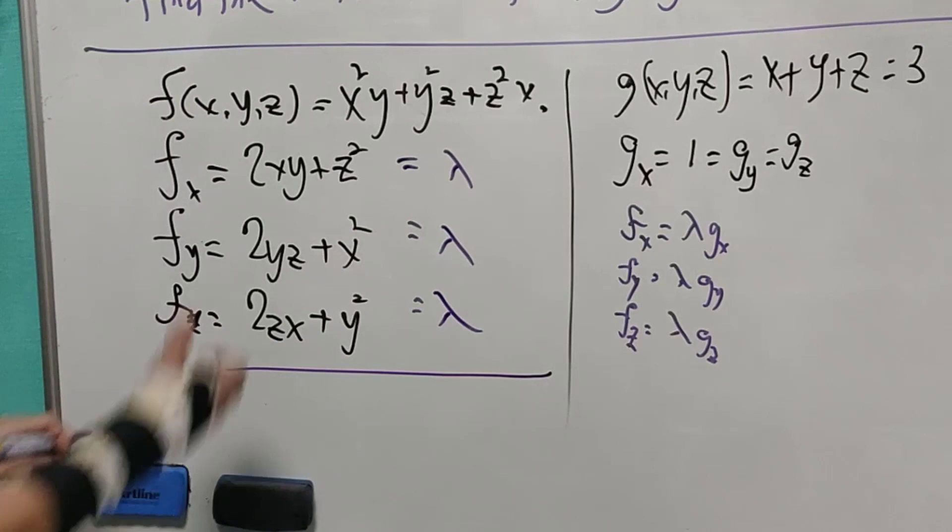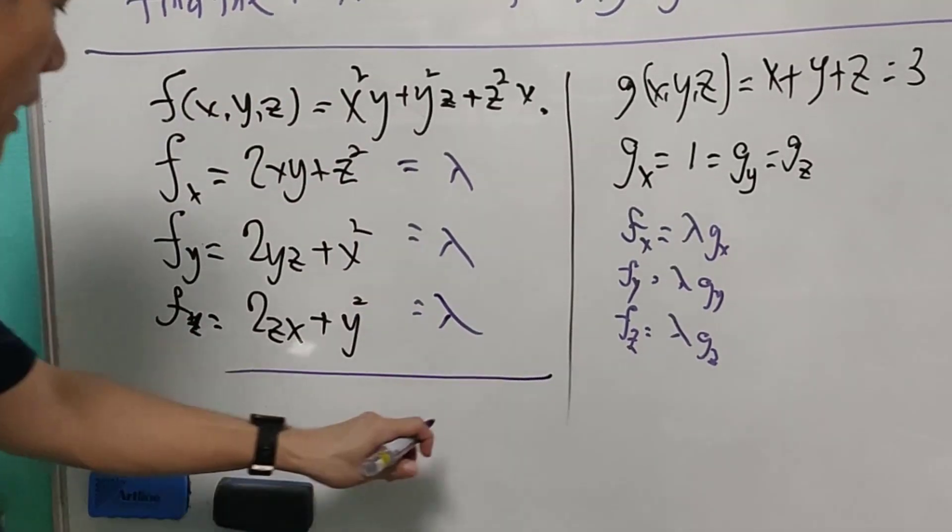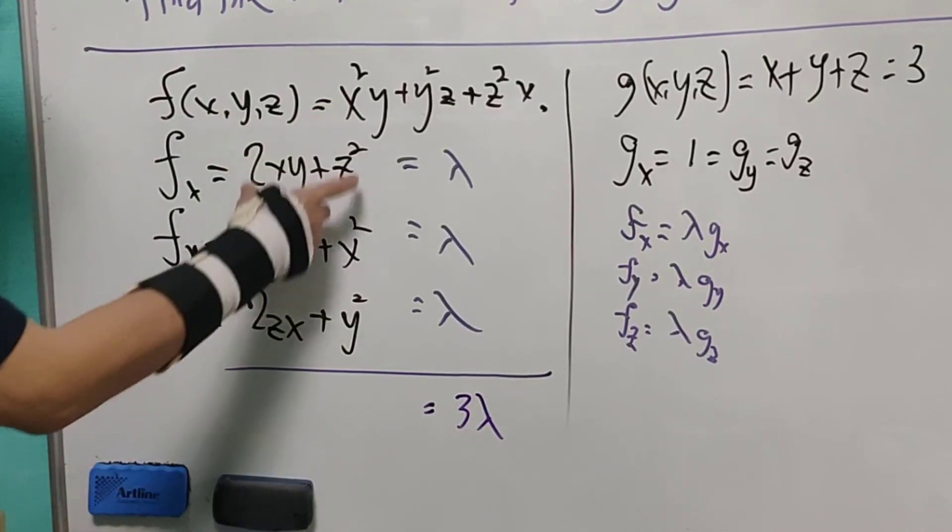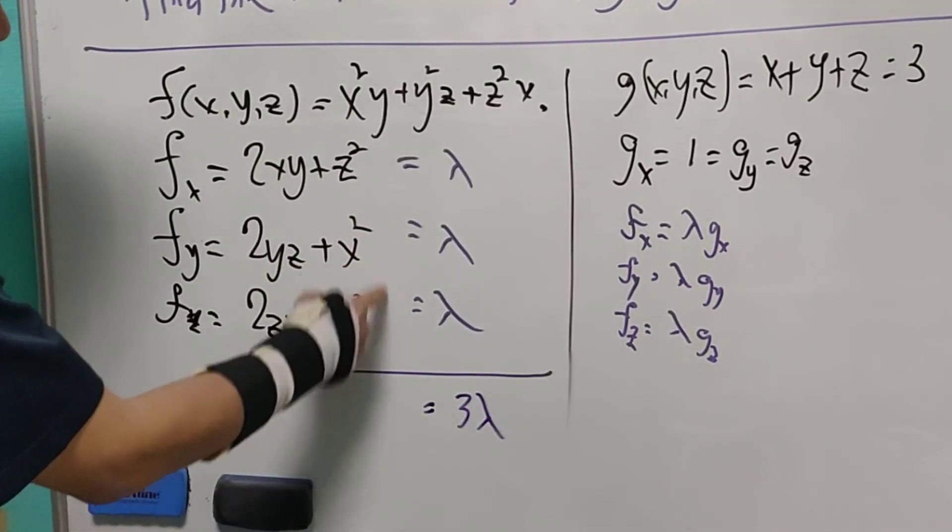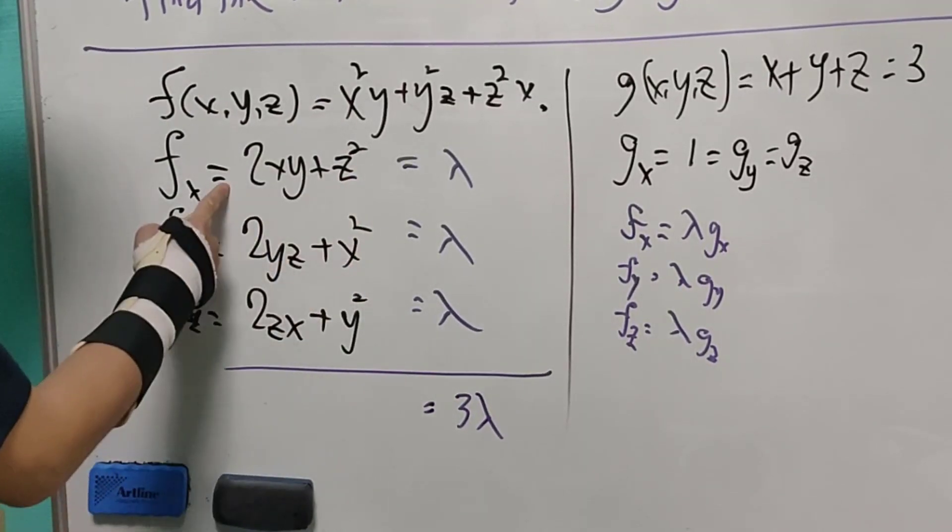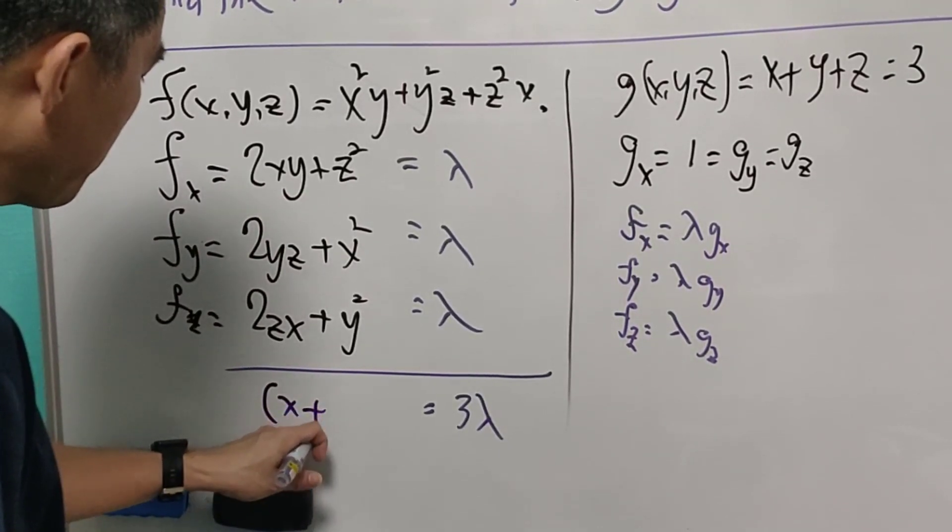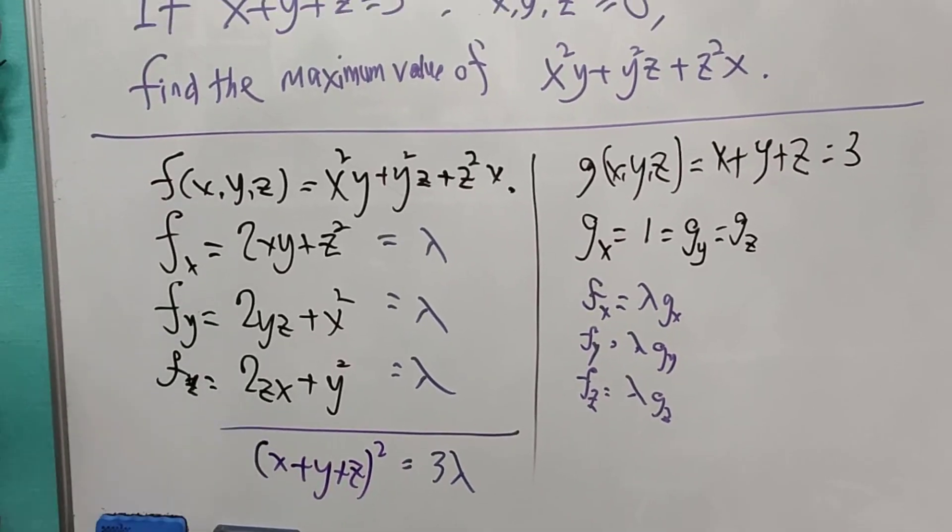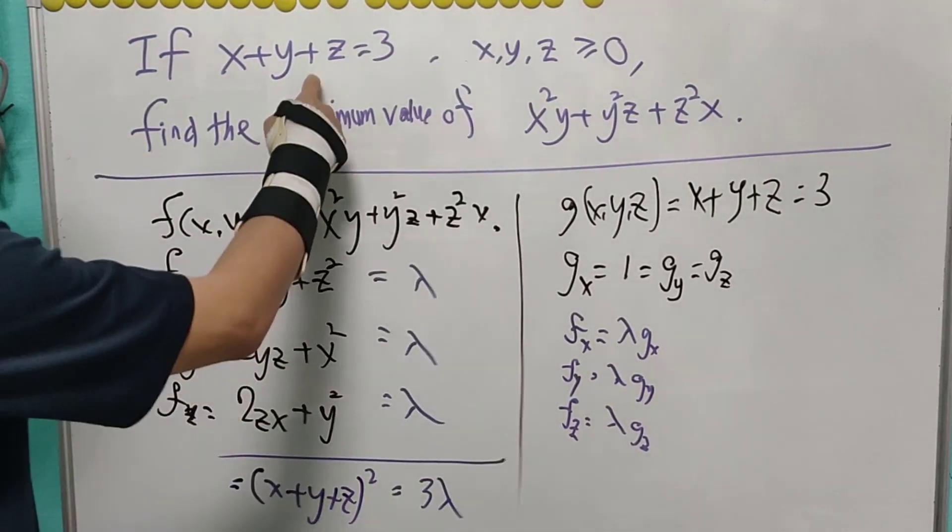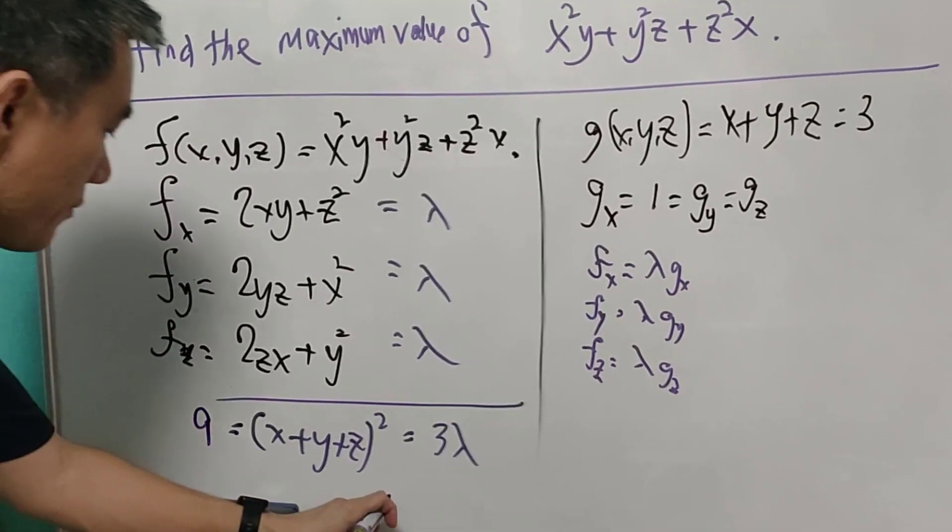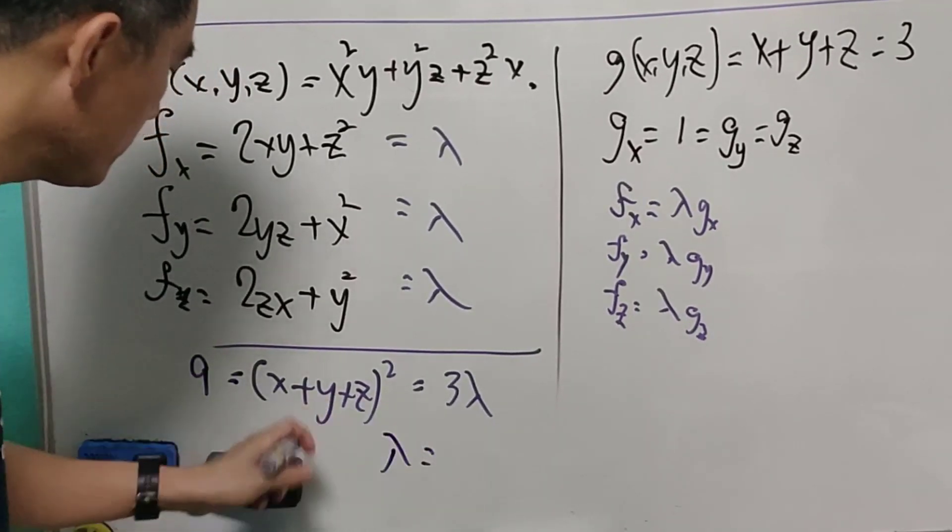Now when we add everything here, then we have this is 3 lambda. And when we add everything here, you will see that x squared plus y squared plus z squared plus double of xy, yz, zx, that is equal to x plus y plus z squared. And because the sum is equal to 3, and therefore this will equal to 9. And therefore lambda is equal to 3.